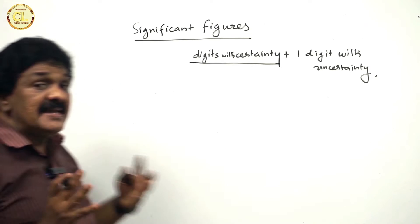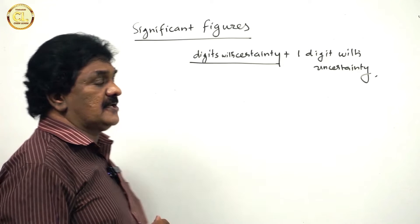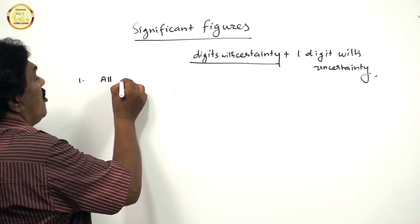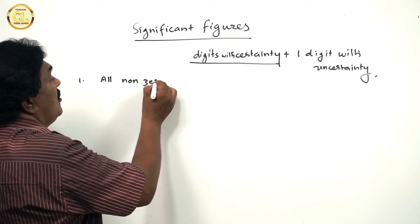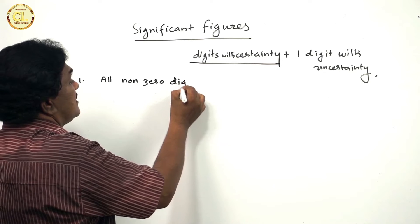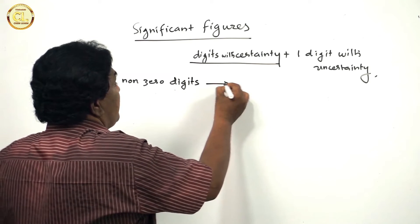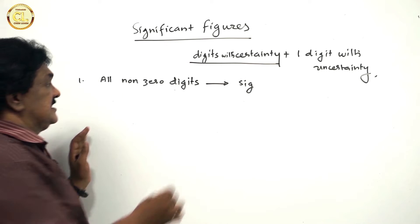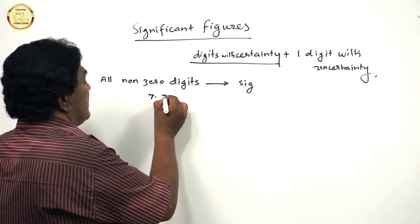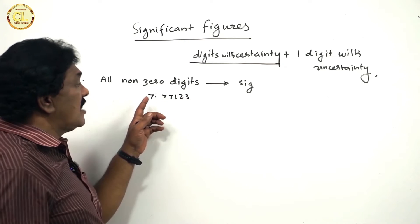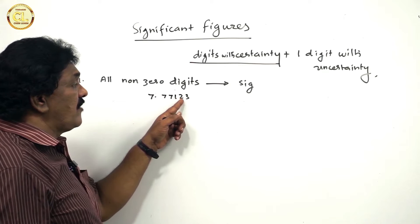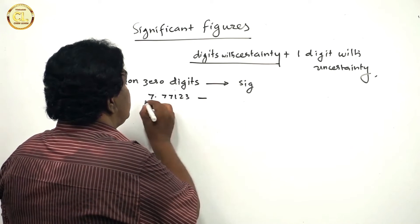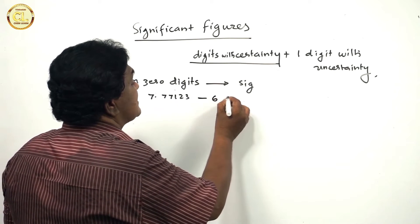Now, important methods of finding significant figures are the following. First method: all non-zero digits in a number are significant. For example, 7.77123 — there are 6 significant figures, that is 6 non-zero digits. So this number contains 6 significant figures.